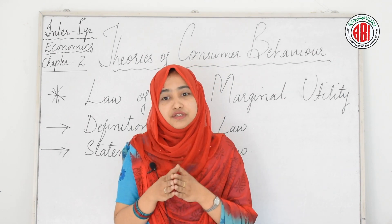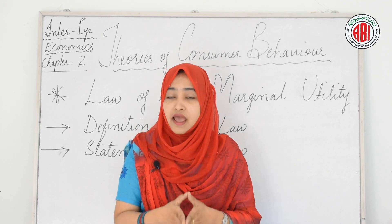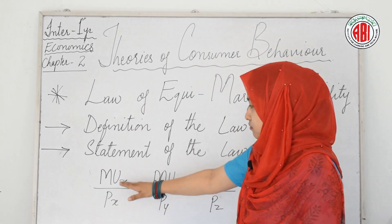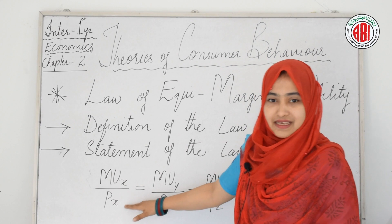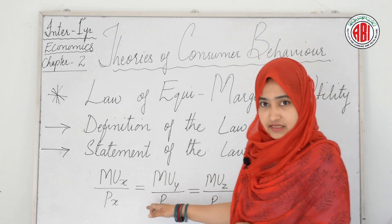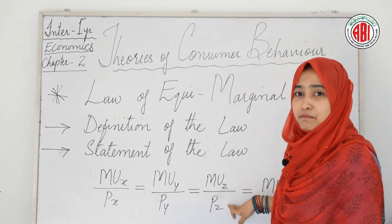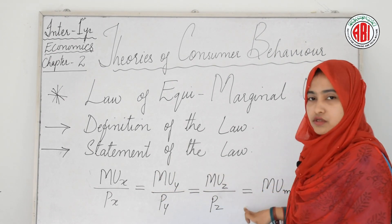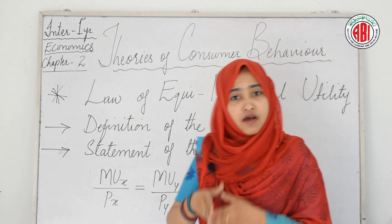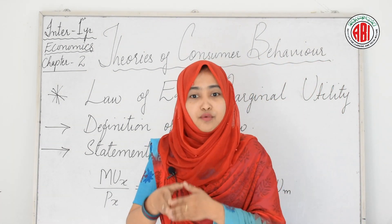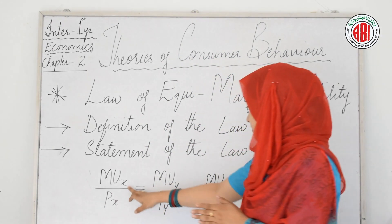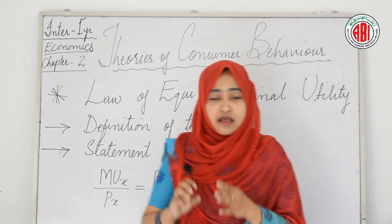The fundamental conditions for a consumer's maximum satisfaction and equilibrium can be written as: MUX divided by PX equals MUY divided by PY equals MUZ divided by PZ equals MUM. Here MUX, MUY, MUZ, and MUM are the marginal utilities of commodities X, Y, Z, and money respectively.